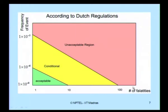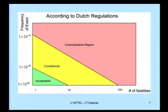According to Dutch regulation, fatalities fewer than 10 occurring at a frequency from 10^-6 to 10^-8 represent an acceptable risk level. If the number of fatalities exceeds 100 and the frequency is in the range of 10^-5 and above, this becomes an unacceptable region. Different international agencies define acceptance levels depending upon their acceptance criteria, giving rise to unacceptable and conditionally acceptable regions of risk.